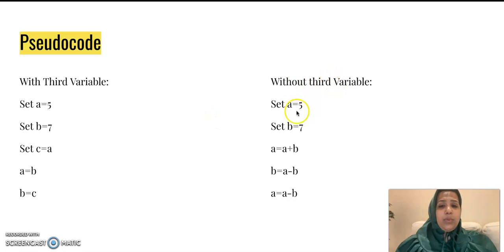Without a third variable, A is 5, B is 7. We total them up, store the result back in A. The new value of B will be the total minus the old value of B. New value of A means the total minus the new value of B which was actually the value of A earlier.